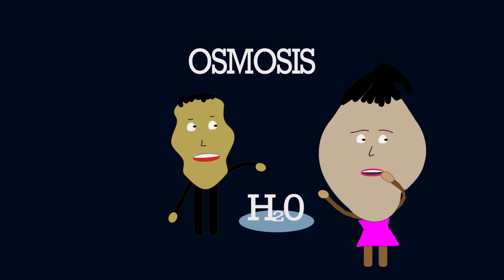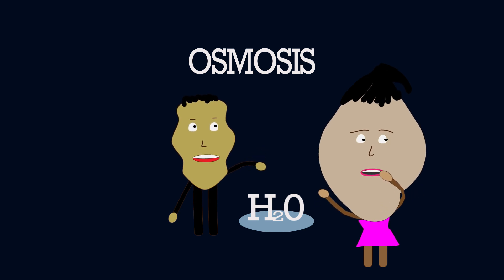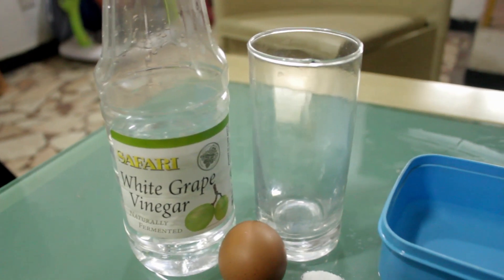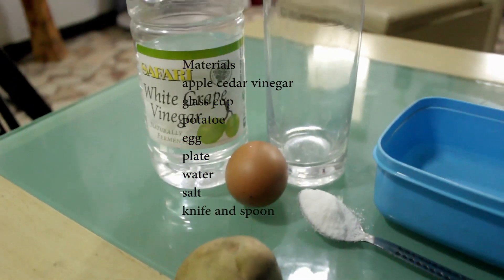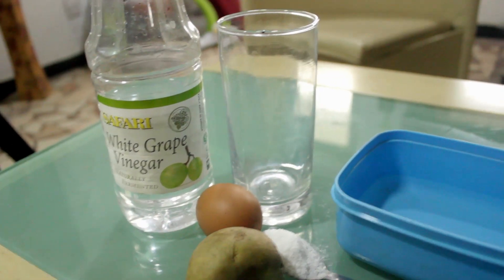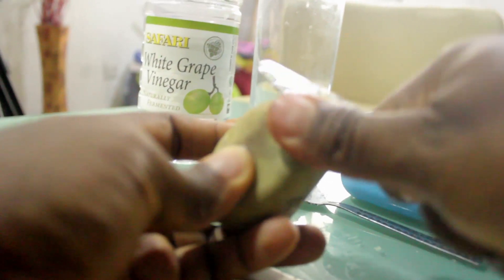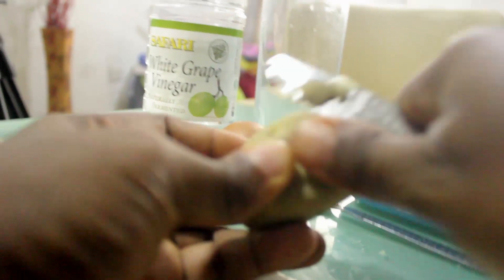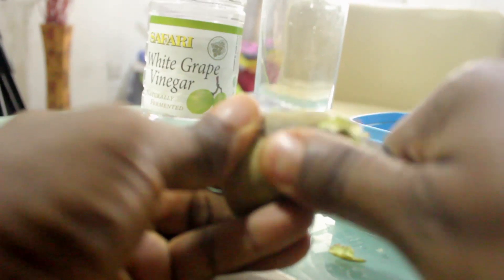Today we will show how osmosis occurs using a potato, water, and an egg. Osmosis is the movement of water through a semi-permeable membrane from an area of high water concentration to an area of low water concentration.